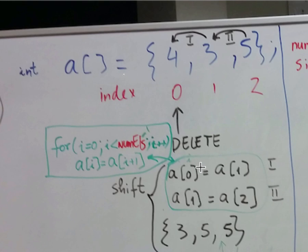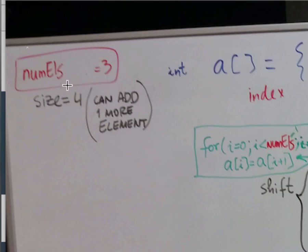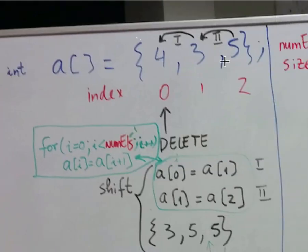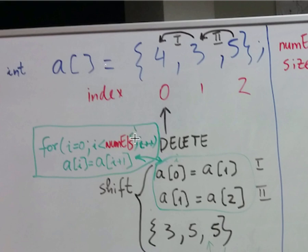The size of the array is still whatever it was originally, but numElements is now reduced. So if we have a size of 4 but numElements is 3, you can still insert something. The real key is that the loop goes from 0 to numElements minus 1, doing A[i] = A[i+1] to perform the actual shift. If you're inserting or deleting at index 1 instead of 0, then i starts at 1. This is the shift for deleting a key from an array.